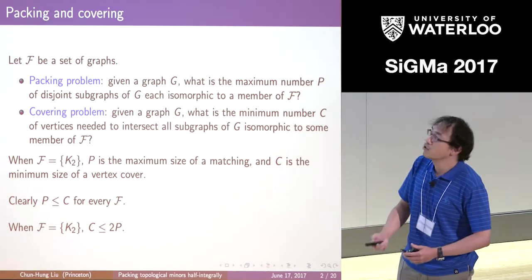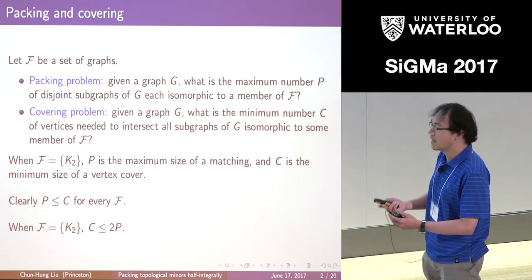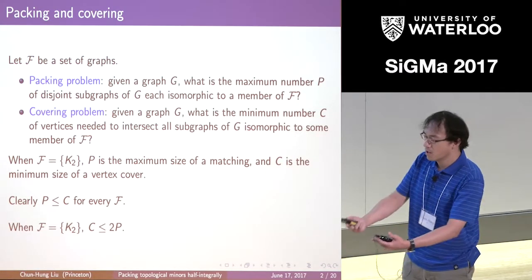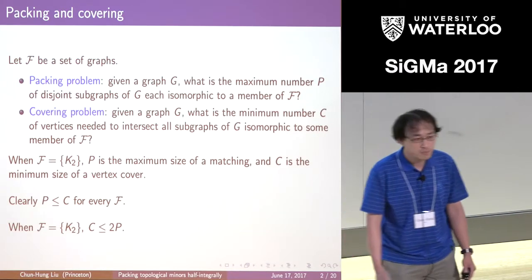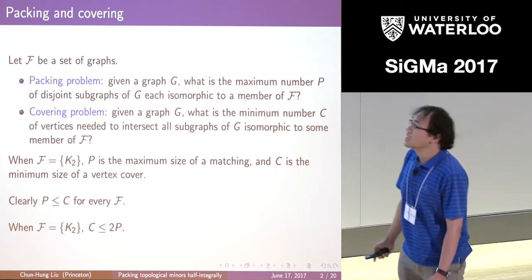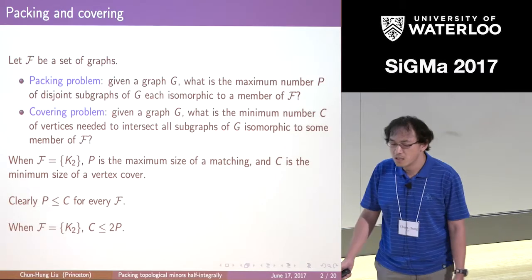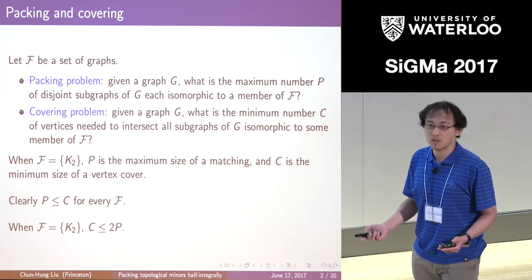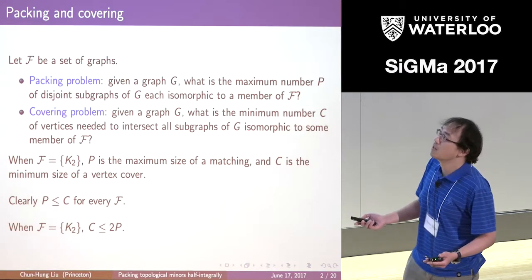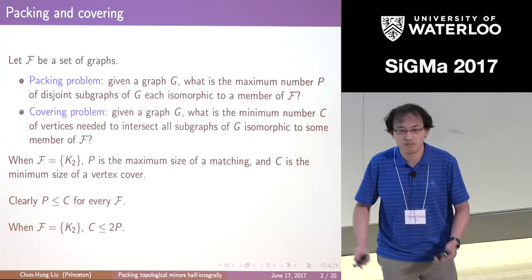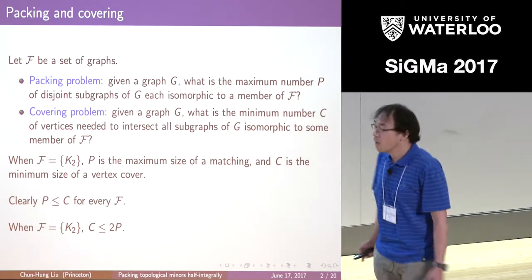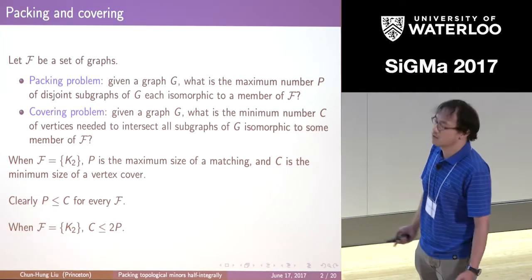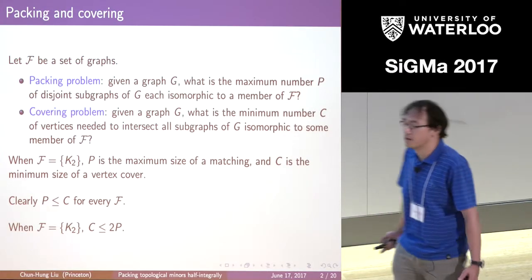Sometimes the solution for the covering problem can be upper bounded by the solution for the packing problem. For example, going back to the matching and vertex cover case, we know the vertex cover number is at most twice the maximum matching size, because we just take the endpoints of the maximum matching as the vertex cover. This situation is quite good because it means if I can solve either problem efficiently, I can get an approximation for the other.